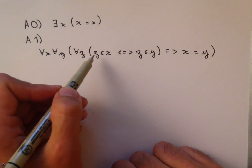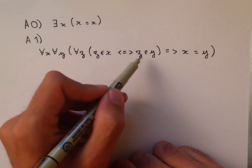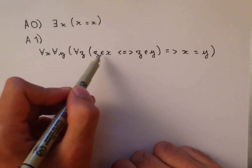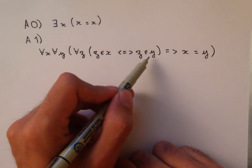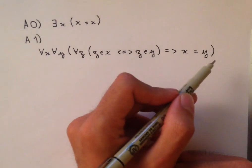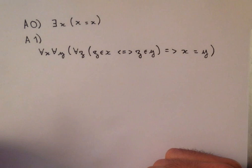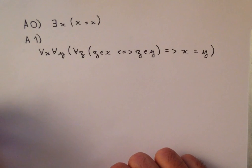or put a different way, if z is in x means that z is in y, and z is not in x means that z is not in y, then x and y are the same sets. In other words, two sets are the same if they contain exactly the same elements.